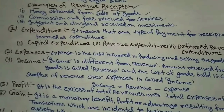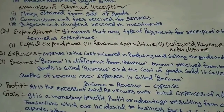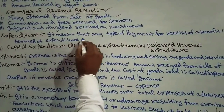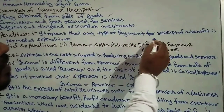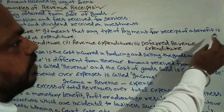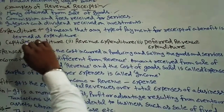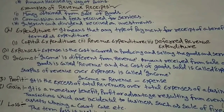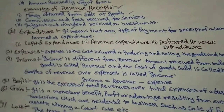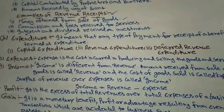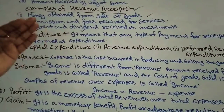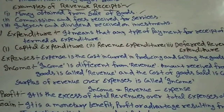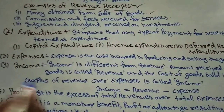Expenditures — what exactly is an expenditure? Expenditure means our expense. It means that any type of payment made for receiving a benefit is termed as expenditure. Any kind of payment that we make in order to receive some benefit is called an expenditure.